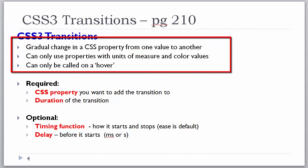Transitions allow a gradual change in a CSS property as you change it from one value to another. You can only use properties that have some kind of unit of measure or color value. For example, you cannot transition an Arial font face into a Helvetica font face. However, you can transition background colors and background gradients from one to another. Transitions can only be accomplished on a hover because there has to be something to trigger the change from one value to another.